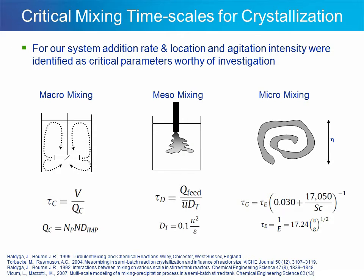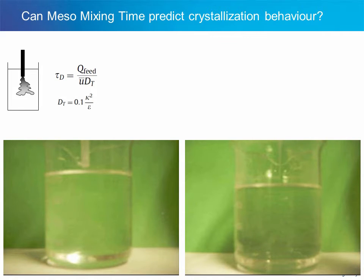One way to look at anti-solvent addition crystallizations is from the mixing perspective. There are three different types of mixing to consider: first, macro mixing at the bulk level of the crystallizer itself; second, meso mixing, which is at the frame of reference around where the anti-solvent is added — essentially the plume of anti-solvent that gets added to the bulk solution; and finally, micro mixing at a much smaller scale. For anti-solvent addition crystallization, our hypothesis was that the meso mixing time scale would be most important, because it is really at the scale where the anti-solvent gets added to the bulk solution.